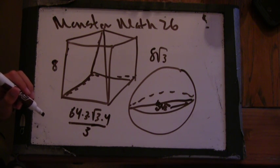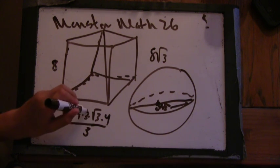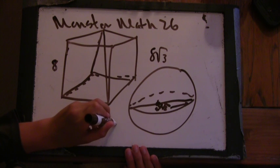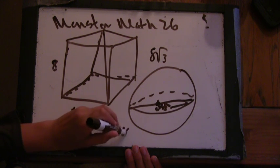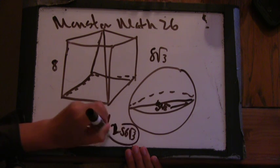4 thirds pi r cubed. Okay. So 256 root 3.